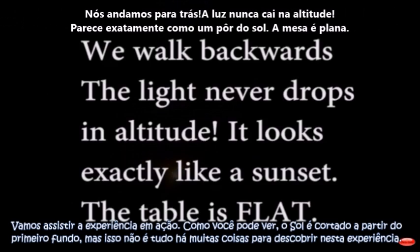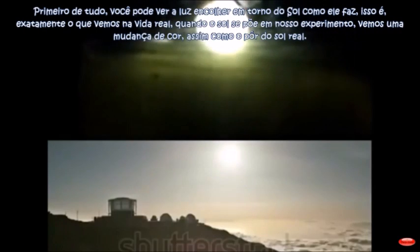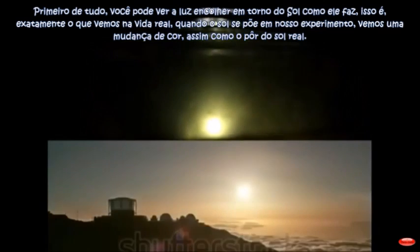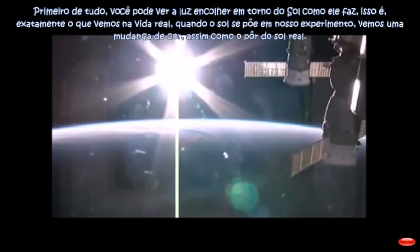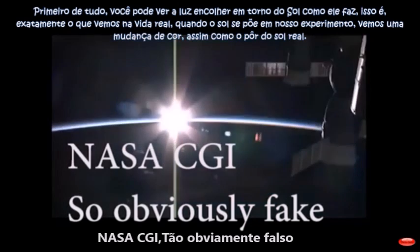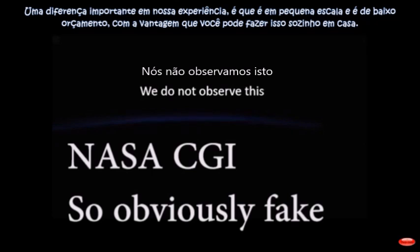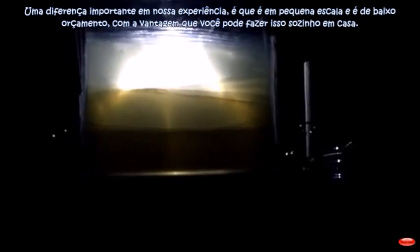Let's watch the experiment in action. As you can see, the sun gets cut off from the bottom first. You can see the light shrink around the sun as it sets — this is exactly what we see in real life. When the sun sets in our experiment, we see a color change, just like real sunsets. One major difference in our experiment is that it's on a small scale and it's low budget, but the advantage is you can do this yourself at home.